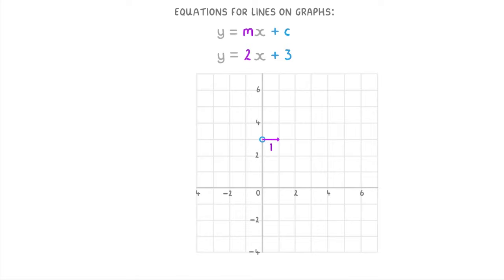Then, because our gradient is 2, we know that by every one place that our line moves across, it will move up by two places. So it will also go through this point here. And then all we have to do is draw a line between these two points and extend it across the whole graph, and that will be our line.